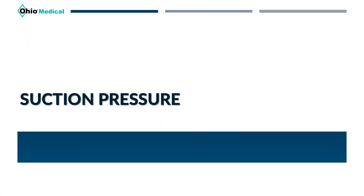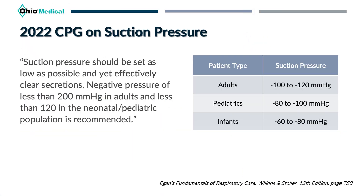The final point of emphasis from the CPG that we'll discuss today is suction pressure. The CPG states that suction pressure should be set as low as possible to effectively clear secretions. A negative pressure of less than 200 millimeters of mercury in adults is recommended. As a general rule, suction pressure should be set as follows: adults, negative 100 to negative 120; pediatrics, 80 to 100; infants, 60 to 80. You can go to negative 200 in adults, but never more than that.